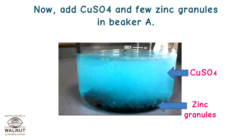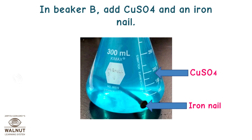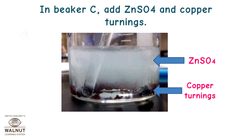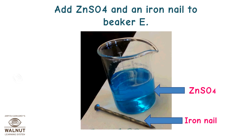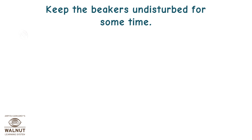Now, add CuSO₄ and zinc granules in beaker A. In beaker B, add CuSO₄ and an iron nail. In beaker C, add ZnSO₄ and copper turnings. Add FeSO₄ and copper turnings to beaker D. Add ZnSO₄ and an iron nail to beaker E. Keep the beakers undisturbed for some time.